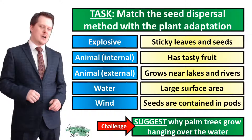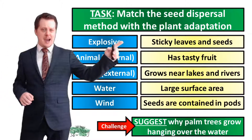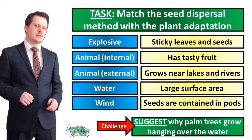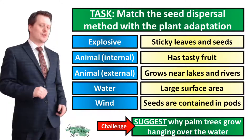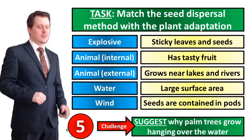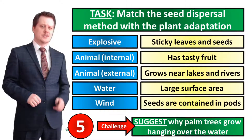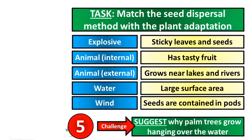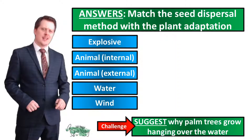For our next task I'd like you to match up the method of seed dispersal to the adaptation that that plant will have. If you still want a challenge, suggest why palm trees grow hanging over the water. I'm going to put five seconds on the clock, and if you need more time pause the video. When you finish we'll go through the answers together.